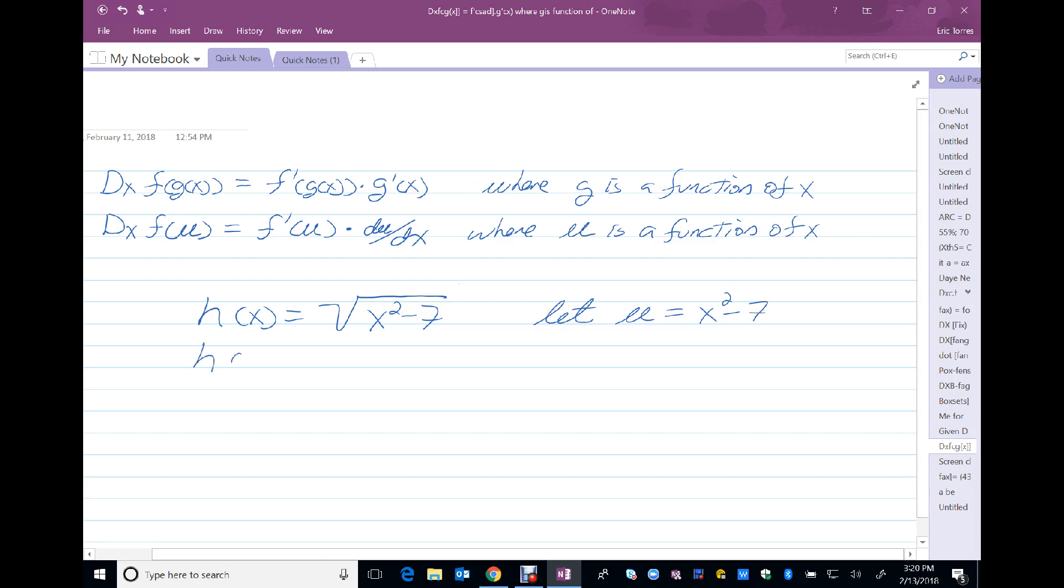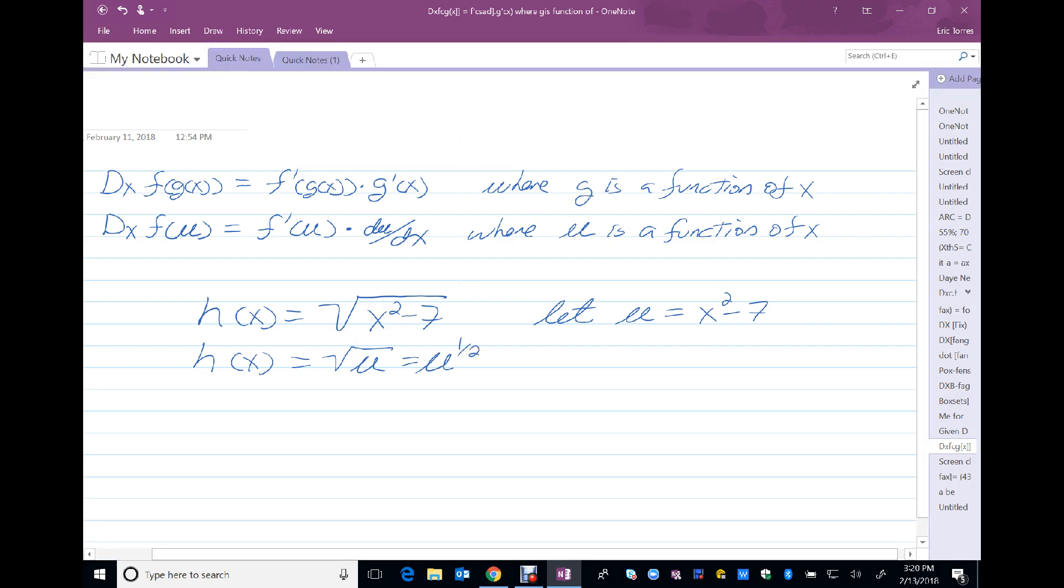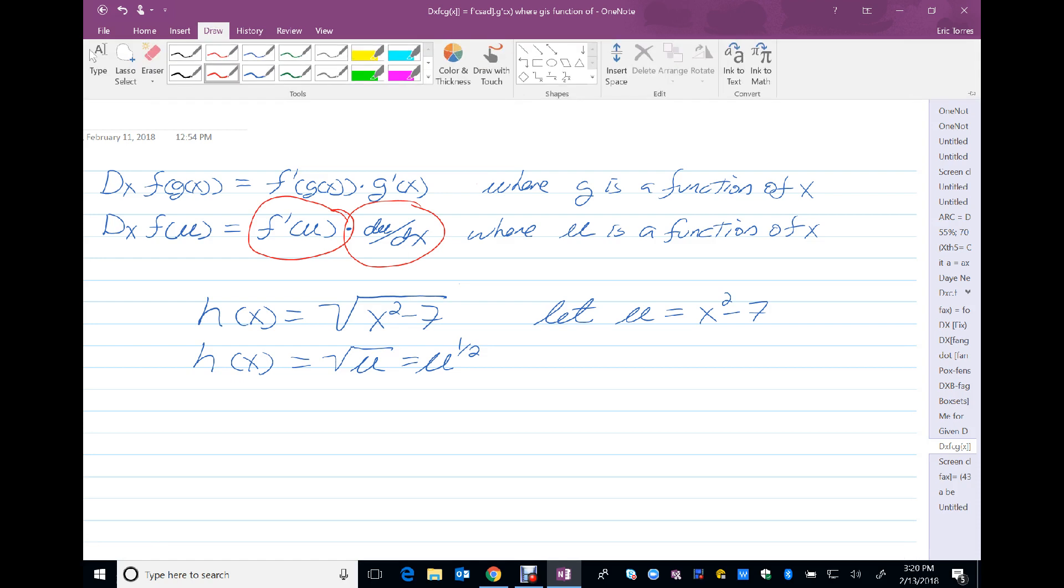And then h of x becomes the square root of u, or simply u to the 1 half. Now, what's important to know when we use this technique is I'm going to have to take the derivative of two separate items. So let's see that happen.